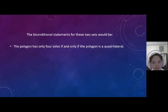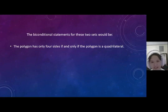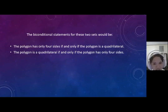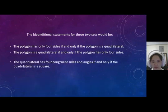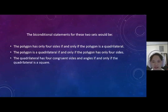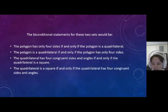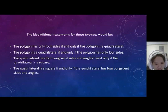The polygon has only four sides if and only if the polygon is a quadrilateral. The polygon is a quadrilateral if and only if the polygon has only four sides. The quadrilateral has four congruent sides and angles if and only if the quadrilateral is a square. The quadrilateral is a square if and only if the quadrilateral has four congruent sides and angles.